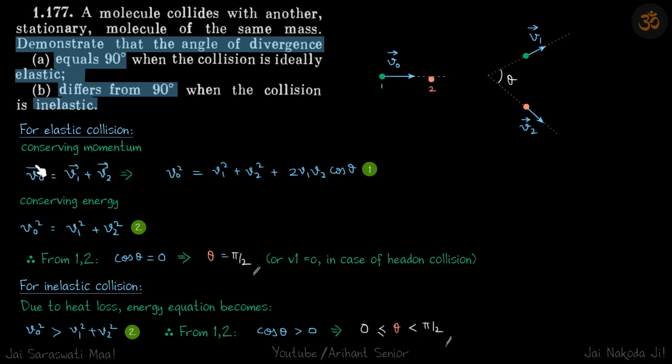Considering the magnitude so that we get a cos theta term on the right side, we will get v0 square equals v1 square plus v2 square plus 2 v1 v2 cos theta.